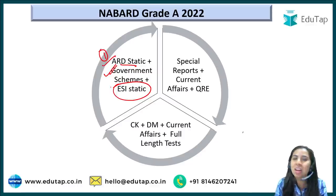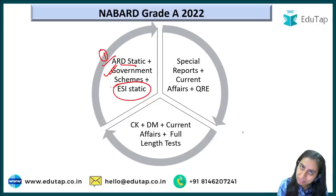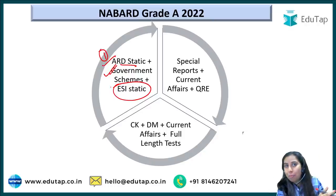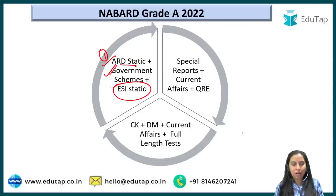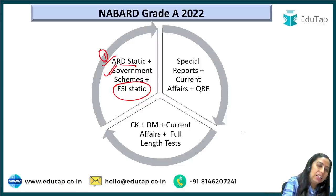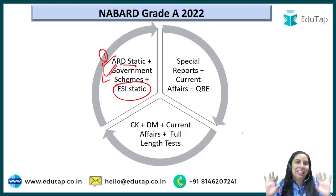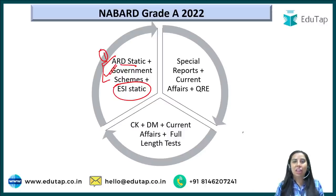ESI majorly covers economy and social issues — social issues being current affairs, schemes, and reports. But economy you cannot just leave. So it is better that you cover the most important chapters of ESI as well. Slot 1 should always be ARD static, government schemes, and ESI static. ARD static and government schemes are the two tires of your vehicle — very, very important.